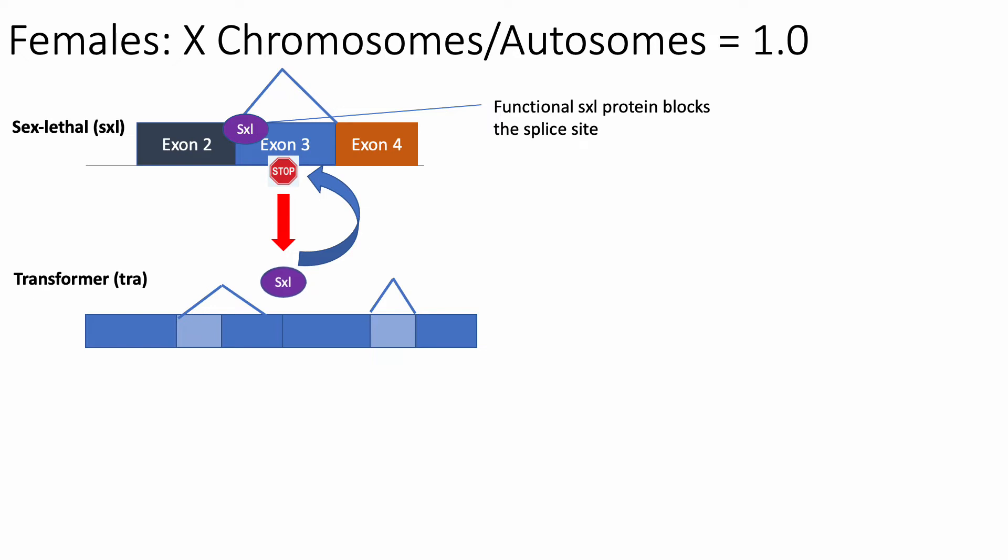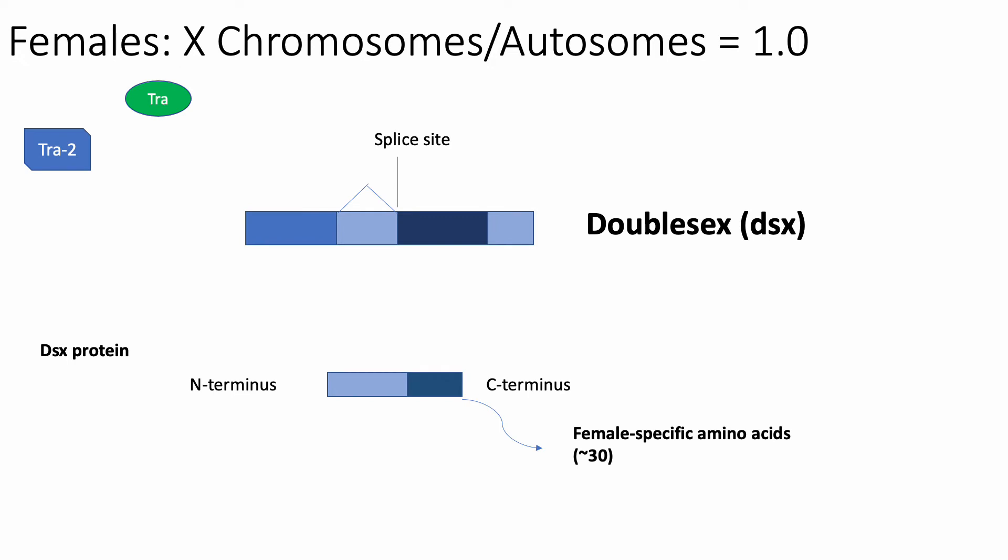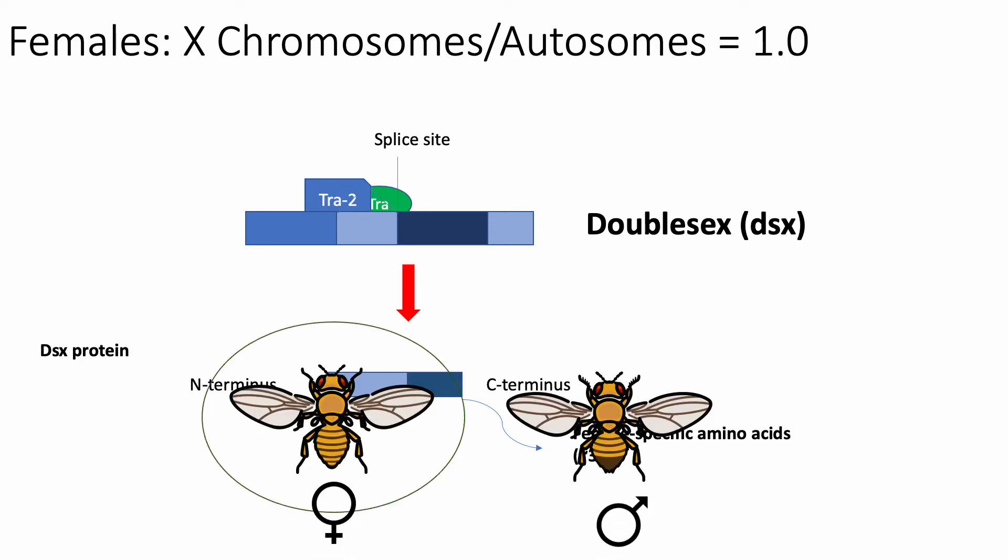In females, sex-lethal also interferes with the proximal 3' splice site in the transformer gene found downstream in the sex determination cascade. This interference leads to a functional TRA regulatory protein. The transformer protein activates splicing by binding to specific RNA sequences in the double-sex exon and activating what would normally be a suboptimal splice signal. Then, along with its constitutively produced partner protein, transformer 2, the TRA protein produces a female-specific spliced form of the double-sex transcript, whose encoded protein can regulate and turn off the male genes in favor of the female.